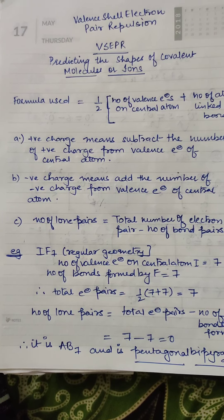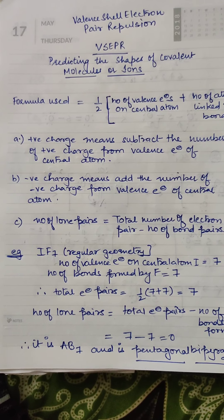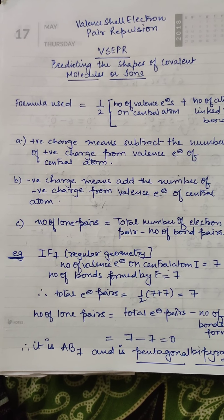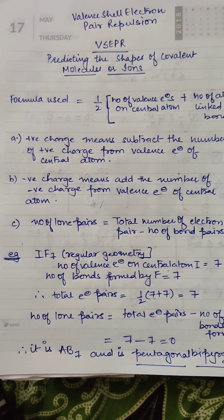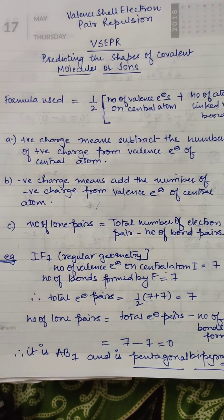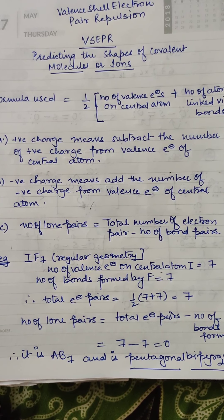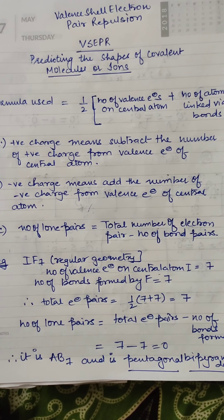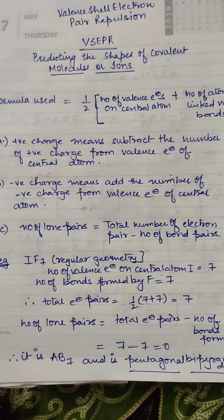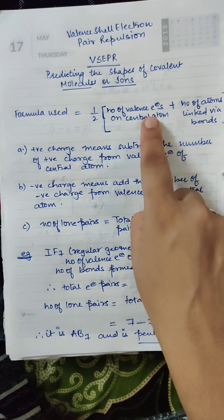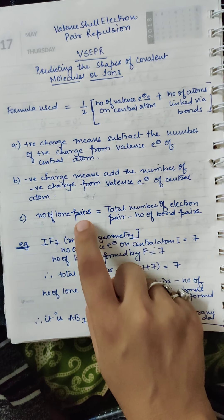Whenever there is a positive charge, you will subtract the number of positive charges from the valence electrons of the central atom. If there is a negative charge, you will add the number of negative charges to the valence electrons of the central atom. Keep these rules in mind when applying the formula.